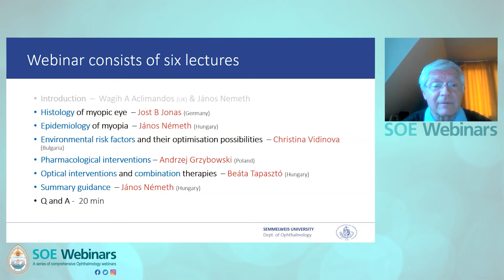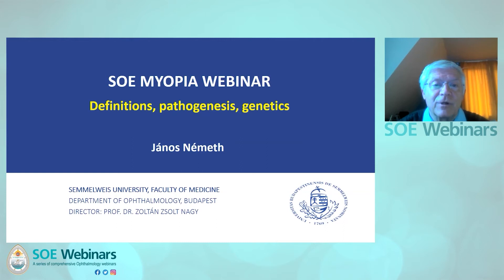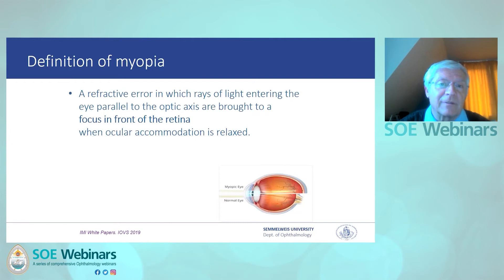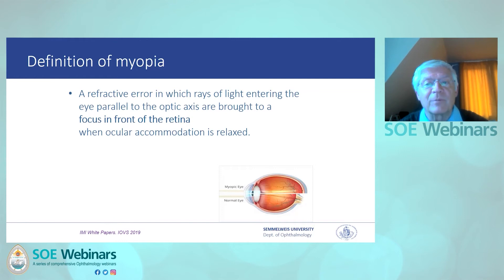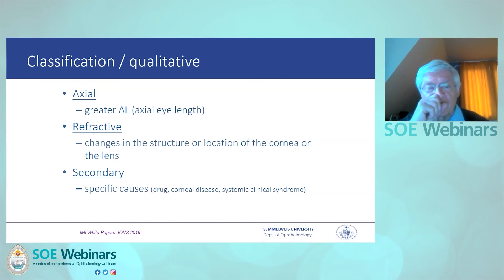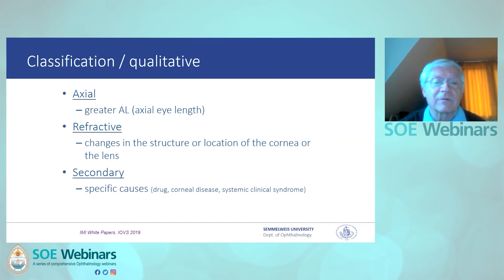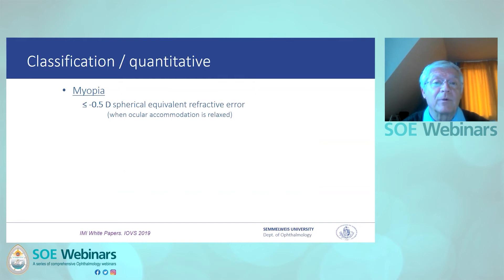At the end there will be 20 minutes for questions and answers. As an introduction, I would like to show some important definitions. The definition of myopia is well known: it is a refractive error in which rays of light entering the eye parallel to the optical axis are brought to a focus in front of the retina when ocular accommodation is relaxed. The qualitative classification includes axial myopia, where the axial eye length is longer than normal, and refractive type, where changes in the structure or location of the cornea or lens cause the myopia, as well as some secondary forms.